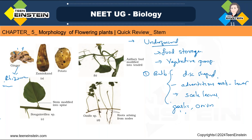Third type is corm. That is a condensed structure — very big and condensed — and it grows vertically in the soil. It will be having scale leaves. Example is Colocasia. You can see it grows vertically with scale leaves. Next is tuber — example is potato. So there are several types here.